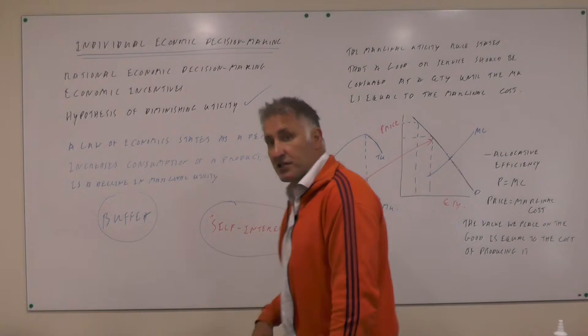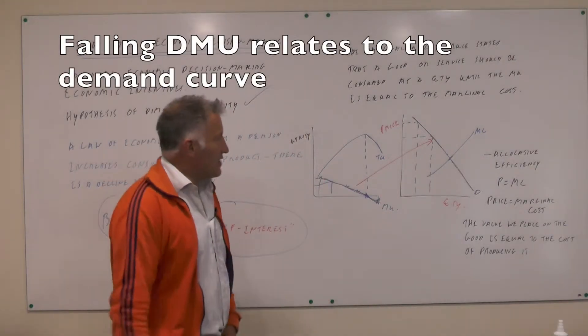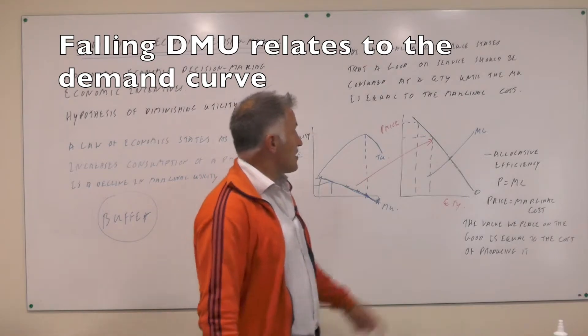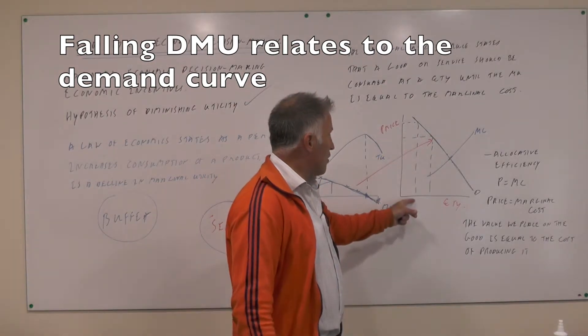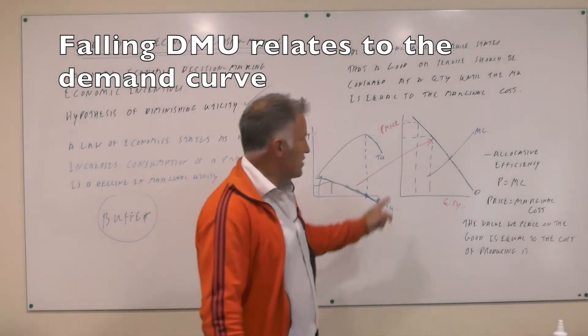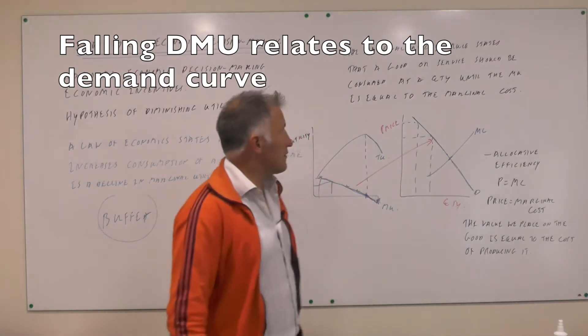So this is the law of diminishing marginal utility, and that then relates to the demand curve over here. It says at a high price people won't demand much but are getting lots of utility, so they may still buy it. But as we have more and more of the goods, the utility falls.